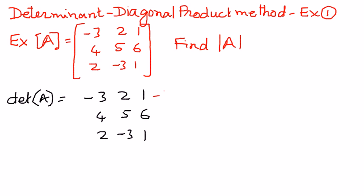Negative 3, 2, 4, 5, and then 2, negative 3. The values negative 3, 4, 2 are the first column elements — we are repeating that and making it the fourth column. Then 2, 5, and negative 3 are the elements of the second column, and we're going to repeat those as the fifth column elements.